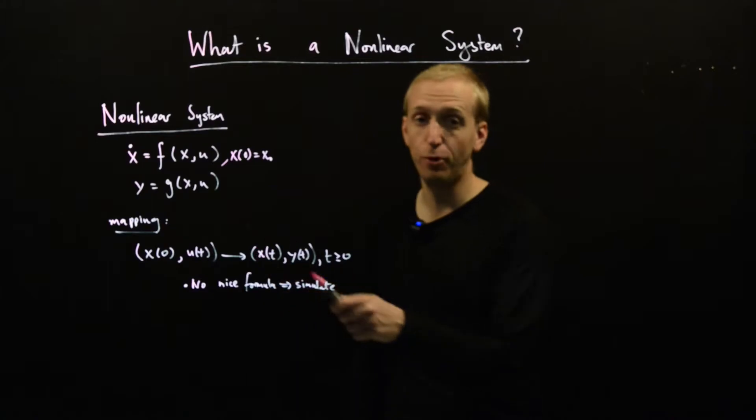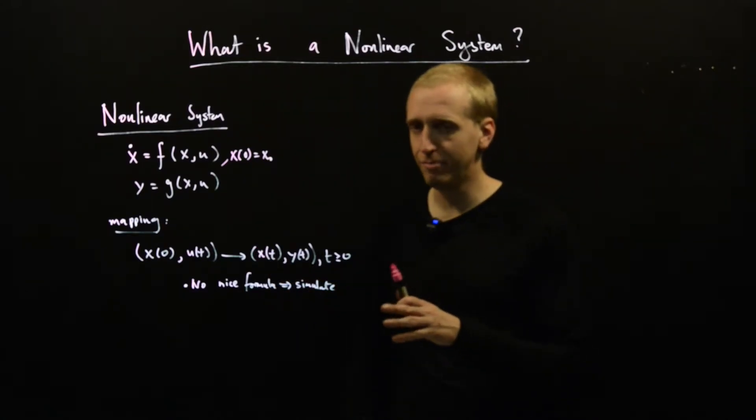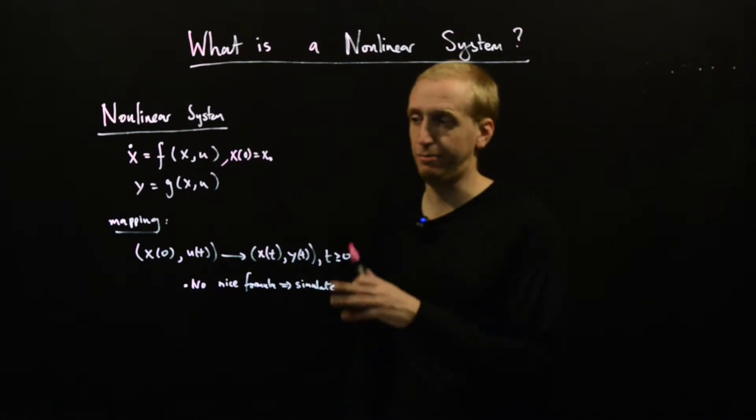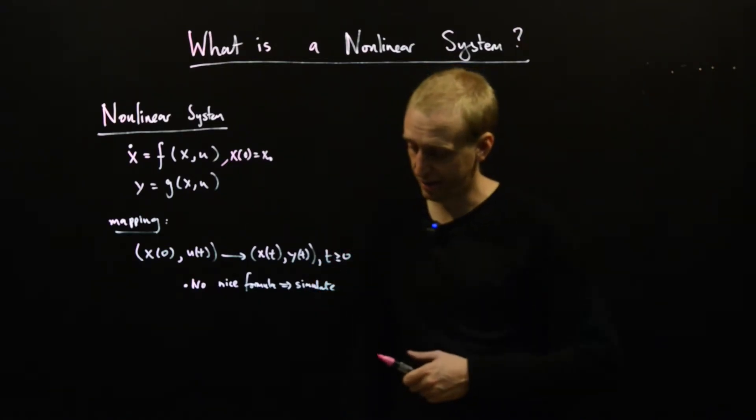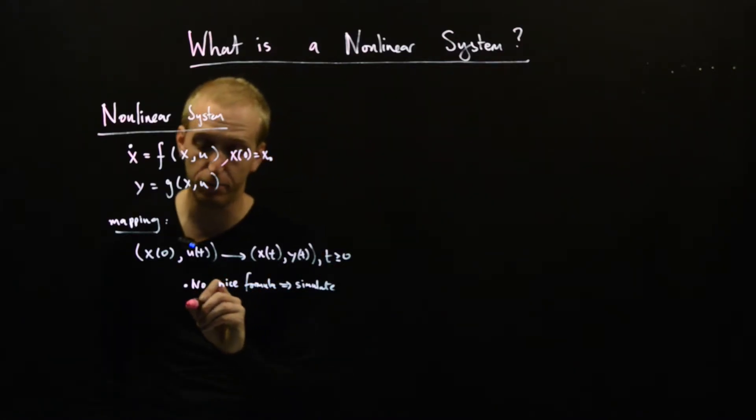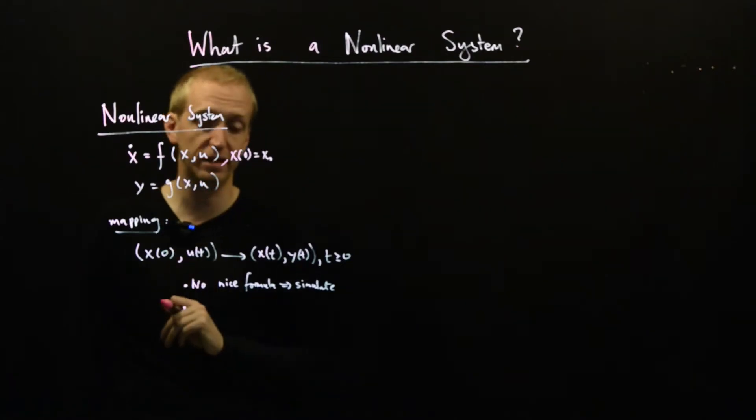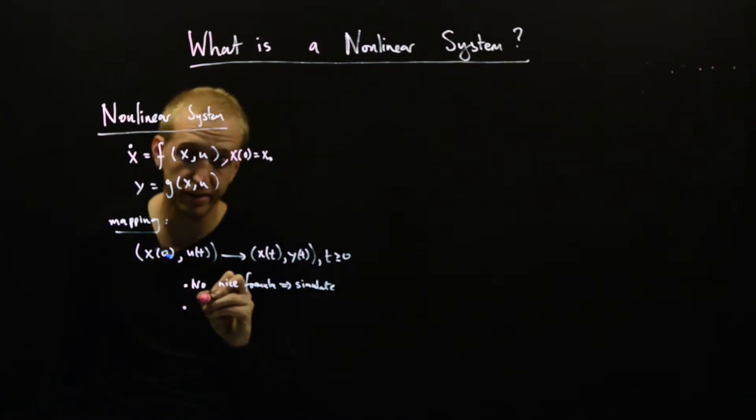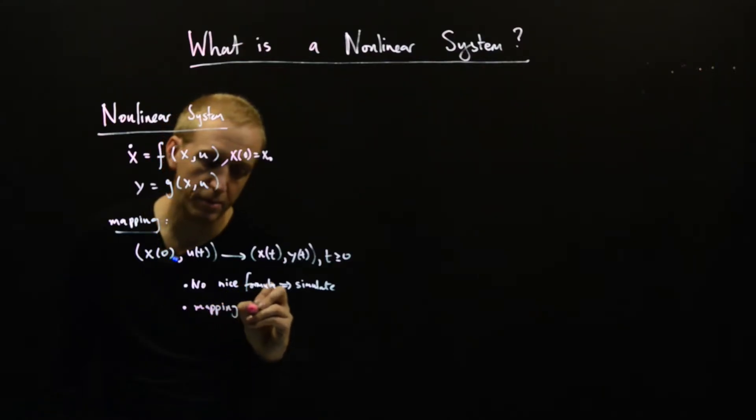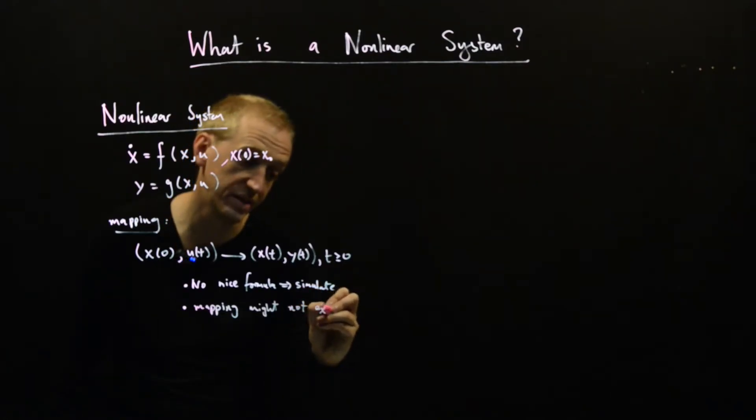So we have no nice formula, and there's also a few other differences from the linear setting. These are largely technical problems, but it's actually not guaranteed just by writing things on this nice simple form that this mapping even exists. The mapping might not exist.